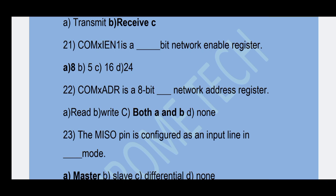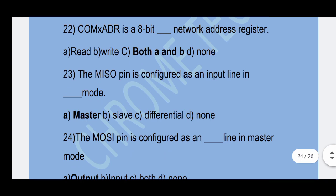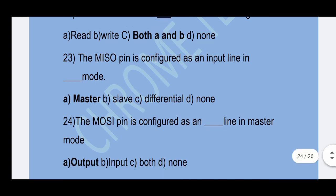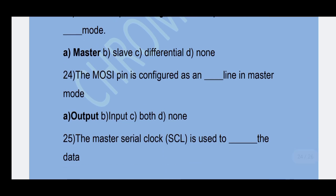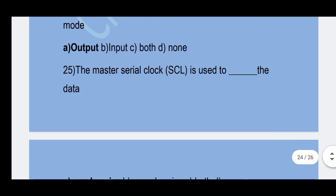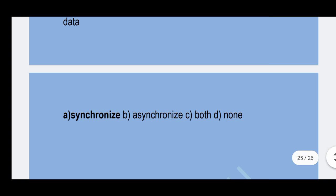Next question: Dash network address register — Option C — both A and B is the correct answer. The MISO pin is configured as input line in master mode. Option A — Master is the correct answer. The MOSI pin is configured as output line in master mode. Option A — Output is the correct answer. The master serial clock is used to synchronize data. Synchronize is the correct answer.